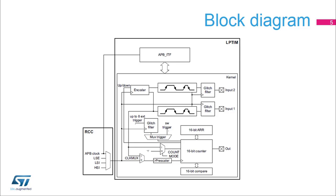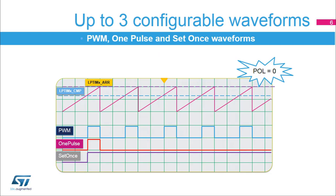The Low Power Timer can be used to output various kinds of waveforms even when the microcontroller is in Stop-0, Stop-1, and Stop-2 low power modes where almost all internal clock sources are turned off. The LPTIMX_CMP and LPTIMX_ARR registers, in conjunction with the WAVE bit field from the LPTIMX_CFGR register and SNGSTRT from the LPTIMX_CR register, are used to control the output waveform. The output waveform is either a typical PWM signal with its period and duty cycle controlled by the LPTIMX_ARR and LPTIMX_CMP registers respectively, or it is a single pulse with the last output state defined by the configured waveform.